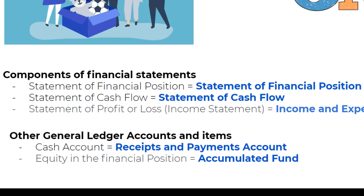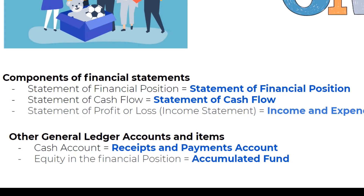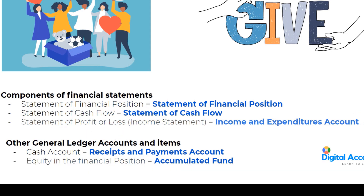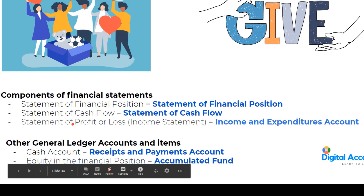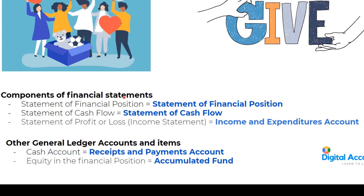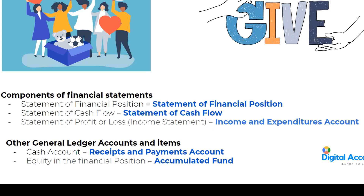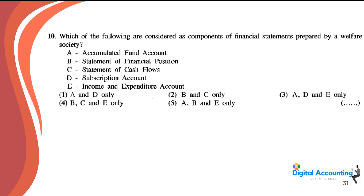For non-profit organizations, the statement of financial position and statement of cash flows use the same names as for-profit entities. However, the statement of profit or loss is called the income and expenditure account, because non-profit organizations prefer not to use the words 'profit' or 'loss'. The subscription account is just a ledger account, not a component of financial statements. So the answer will be B, C, and E.